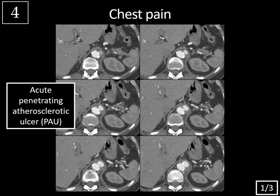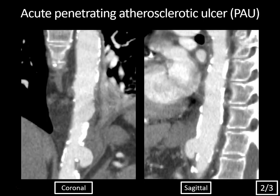Anytime you have a patient presenting with acute aortic syndrome, exclude aortic dissection or rapidly expanding aortic aneurysm, but don't forget penetrating atherosclerotic ulcer and intramural hematoma. This is often confused with ulcerated atherosclerotic plaque, which is confined to the intima and usually benign. But a penetrating ulcer extends through the internal elastic lamina into the media and beyond the normal aortic wall margin. Coronal and sagittal images help make that distinction. Here the ulcer clearly extends beyond the normal aortic lumen, and there's a soft tissue rind adjacent to it corresponding to an intramural hematoma, which is often associated with penetrating atherosclerotic ulcer.